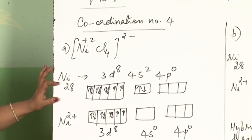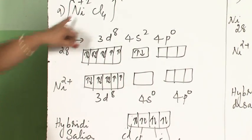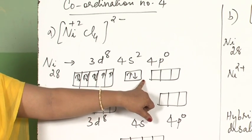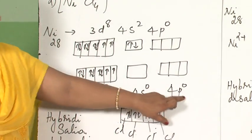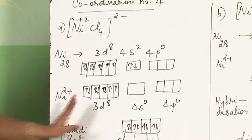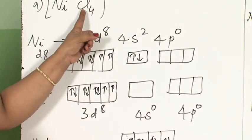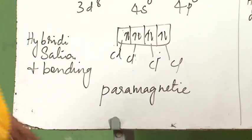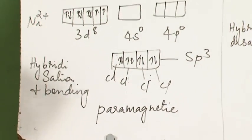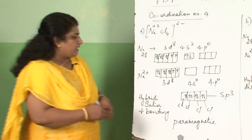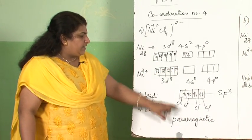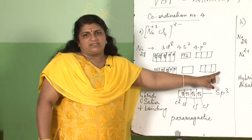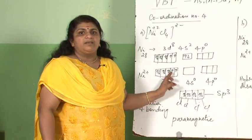For nickel: atomic number 28, configuration 3d⁸4s². In the plus 2 oxidation state, electrons are removed from the outer 4s orbital, giving Ni²⁺: 3d⁸, 4s⁰, 4p⁰. Chloride is not a strong ligand, so outer orbitals are used for hybridization. Four chloride ligands require four orbitals, so the hybridization is sp³. Since outer orbitals are used, it is an outer orbital complex. Unpaired electrons are present, so it is paramagnetic, spin-free, and high-spin.